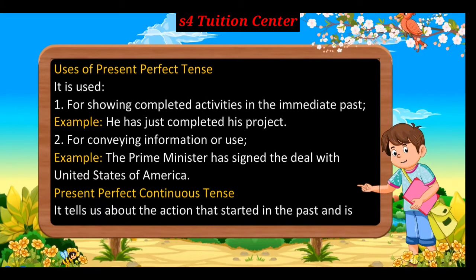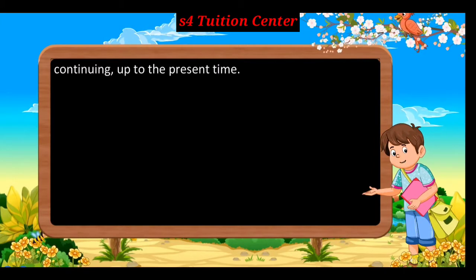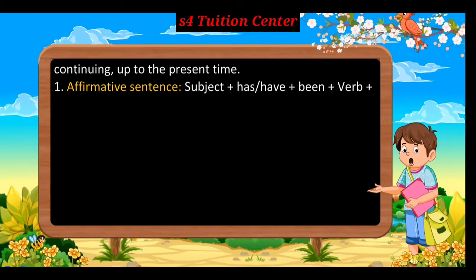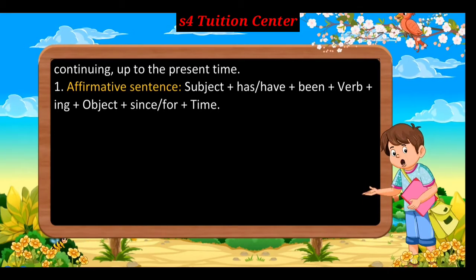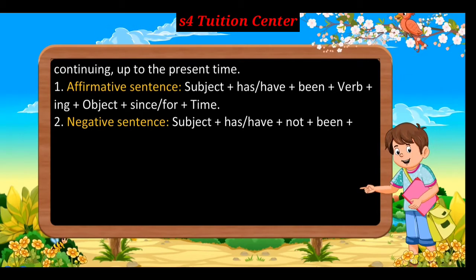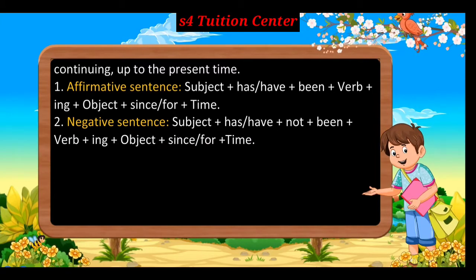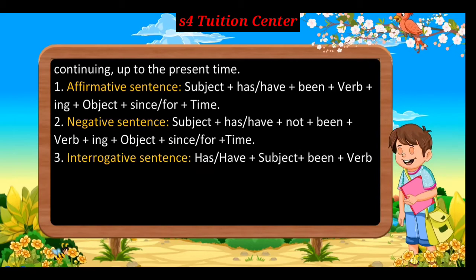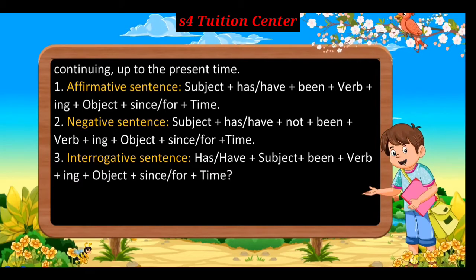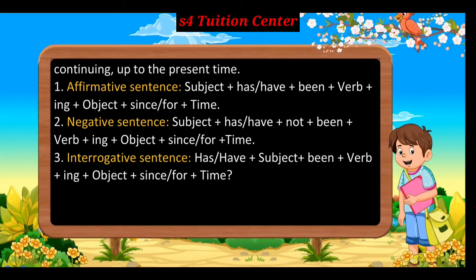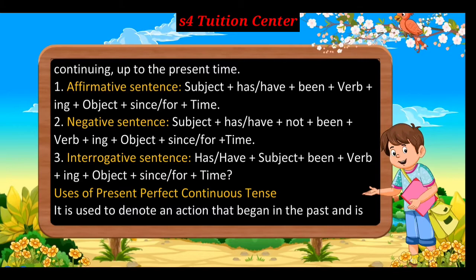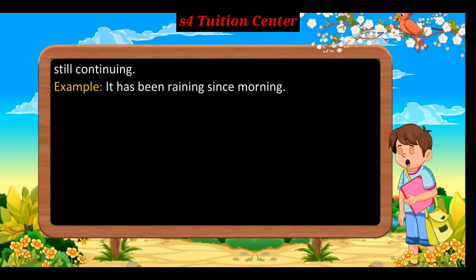Present Perfect Continuous Tense: It tells us about the action that started in the past and is continuing up to the present time. First, affirmative sentence: subject + has/have + been + verb + ing + object + since/for + time. Second, negative sentence: subject + has/have + not + been + verb + ing + object + since/for + time. Third, interrogative sentence: has/have + subject + been + verb + ing + object + since/for + time + question mark. It is used to denote an action that began in the past and is still continuing, e.g., it has been raining since morning.